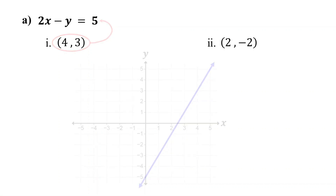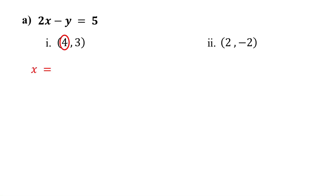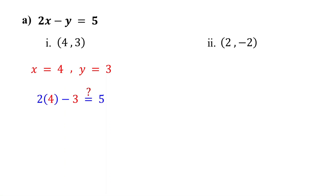Let's see how this works. For any point, the first number is the x value and the second number is the y value. So substitute 4 for x and 3 for y in the equation. Then simplify. 2 times 4 is 8. 8 minus 3 is 5.